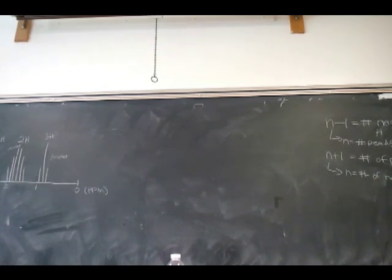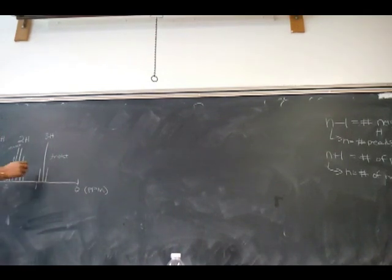So again, we're going to be methodical about this. So the first thing I like to do, typically, is start off on the far right. Because typically on the far right, what group do you find usually? On the far right, between zero to one and a half. Methyl. Methyl. Good. Excellent.